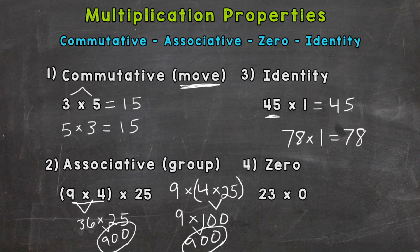And then the last property we're going to discuss is the zero property, and that states that anything multiplied by 0 equals 0. Whether it's 23 times 0, 1000 times 0, 72 times 0, anything times 0 equals 0.